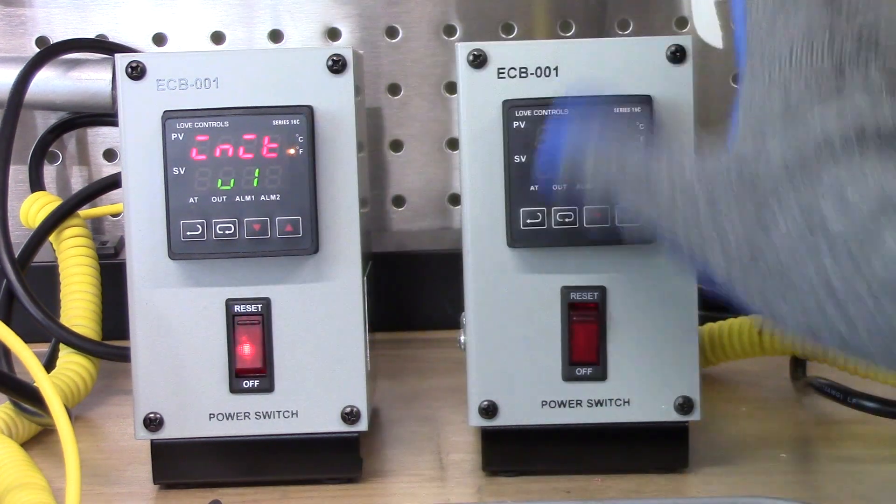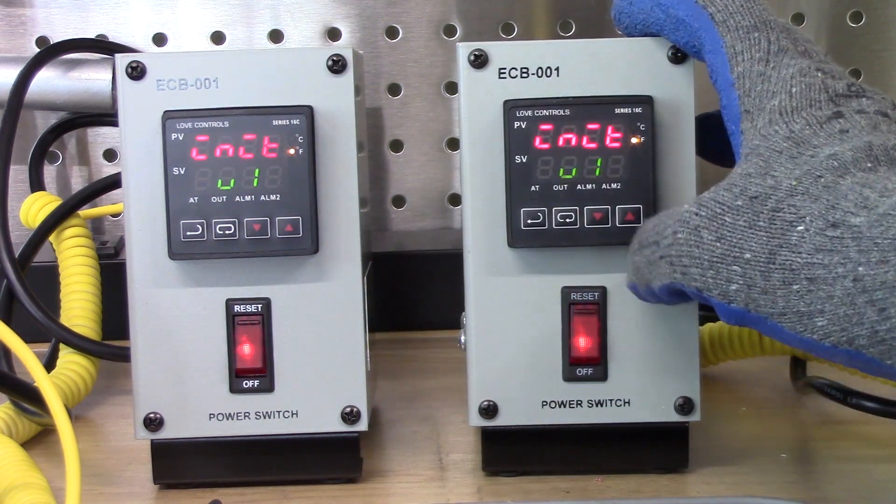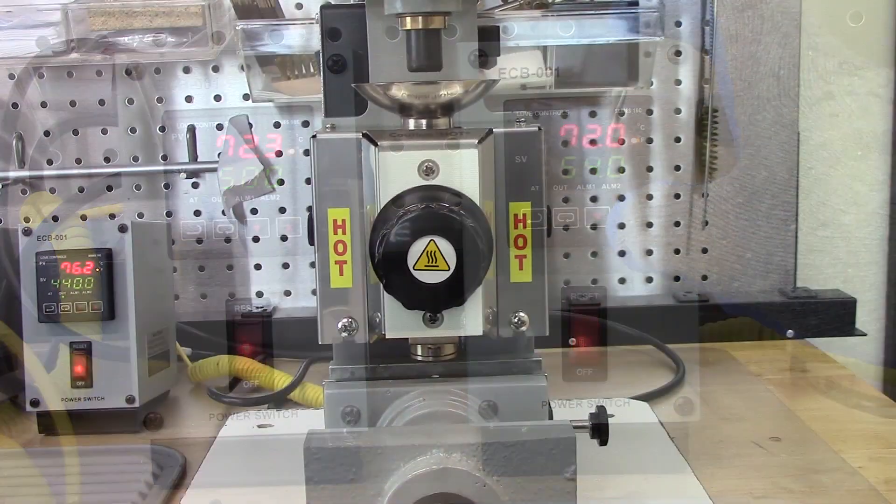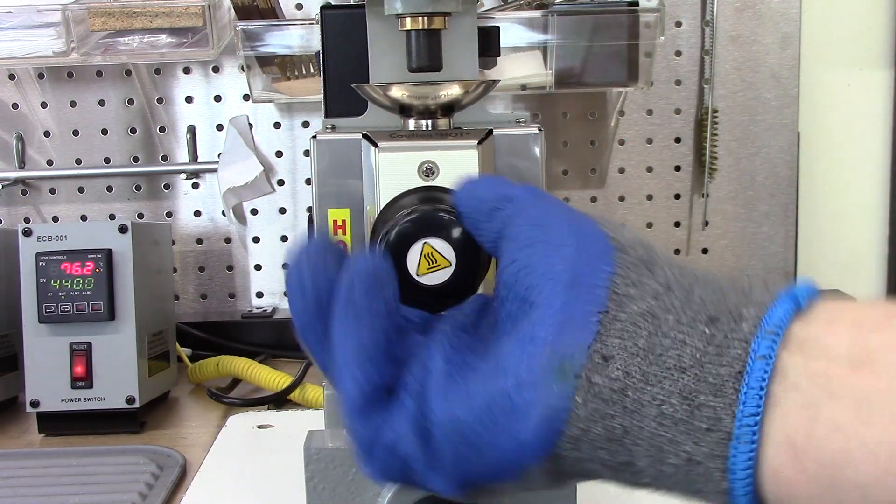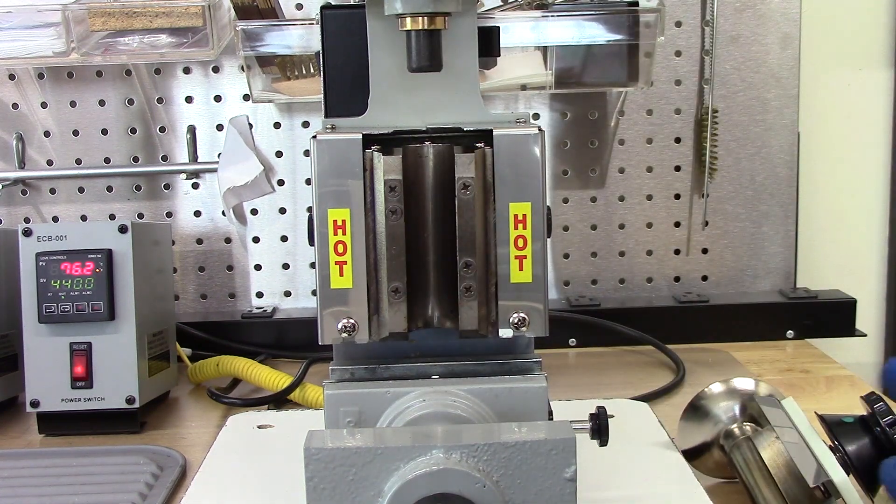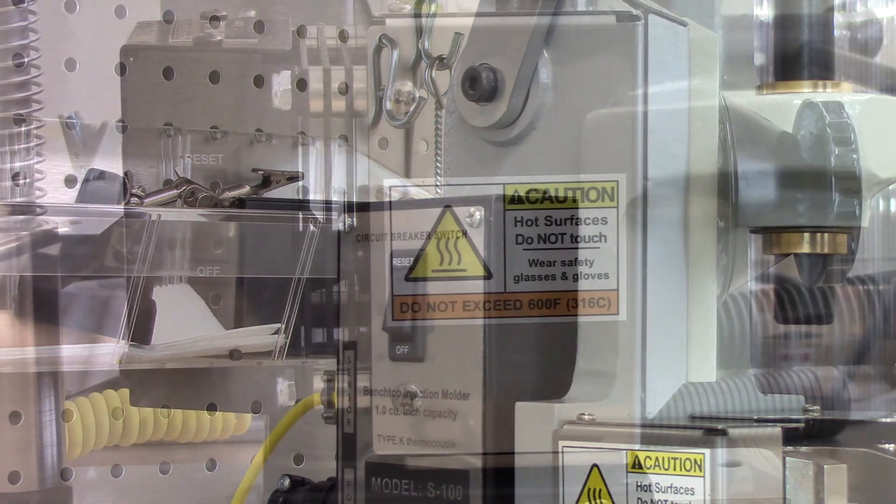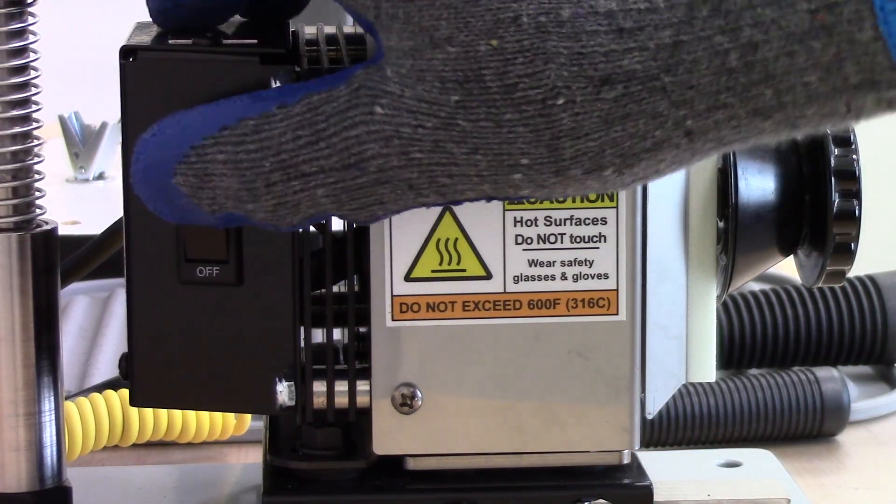Turn on the two controllers, then set the temperature. Remove the injection tube from the Model S100 injection molder and set it aside. Turn on the Model S100 injection molder. Turn on the Model M100 mixing device.